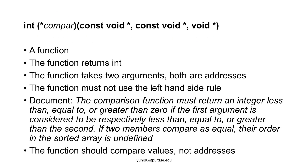Let's now consider the fourth argument of the qsort function. How do we know this argument is a function? Its type is marked by two pairs of parentheses and an asterisk after the first open parenthesis. The comparison function returns an integer and takes two addresses. We know the two arguments are addresses because their types are void asterisk.